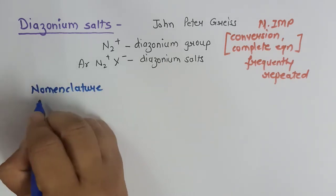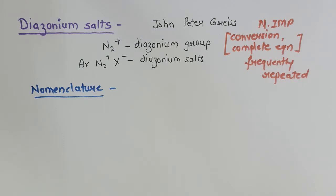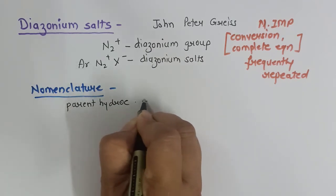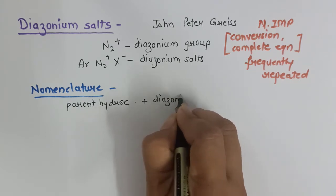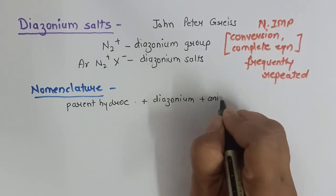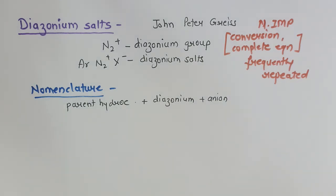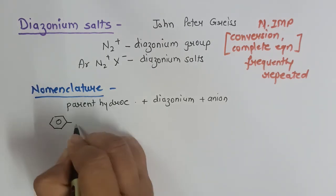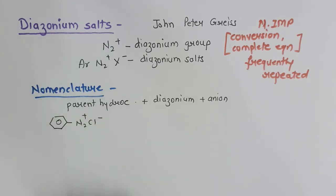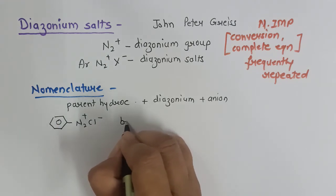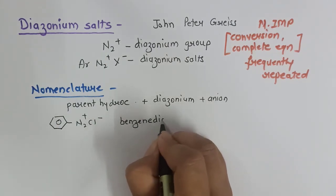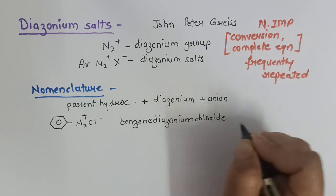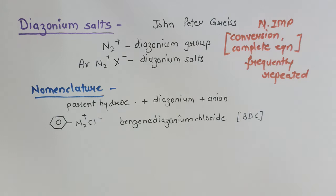The basic rule for nomenclature of diazonium salts is: parent hydrocarbon + the word 'diazonium' + the anion present. In most cases the anion is a halide, and the most commonly used halide is chloride. For example, a benzene ring attached with N2+ and Cl− as anion: parent hydrocarbon is benzene, then 'diazonium', then the anion chloride — giving benzene diazonium chloride, commonly abbreviated BDC.